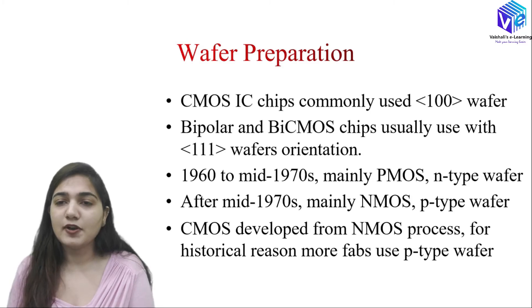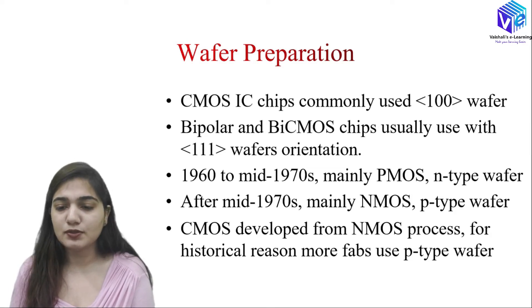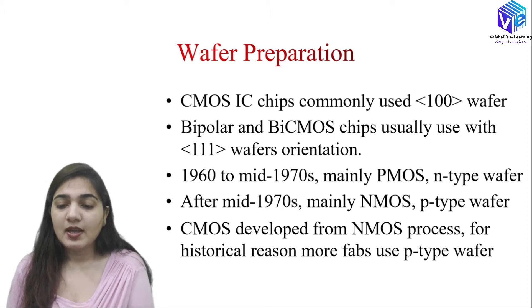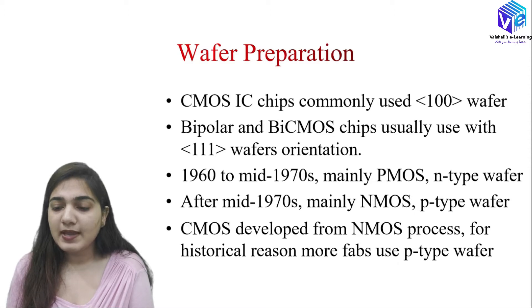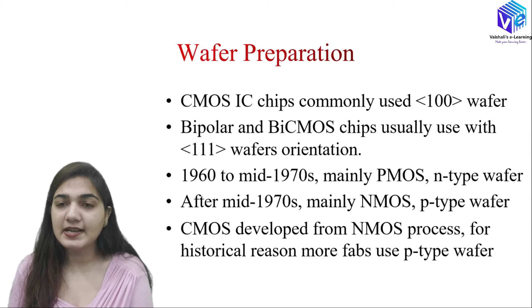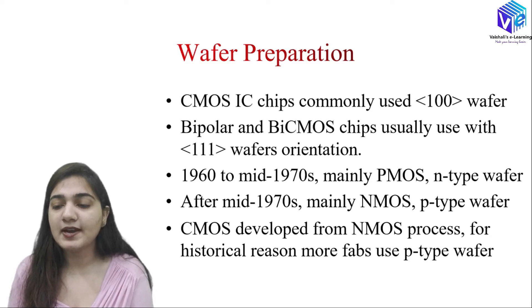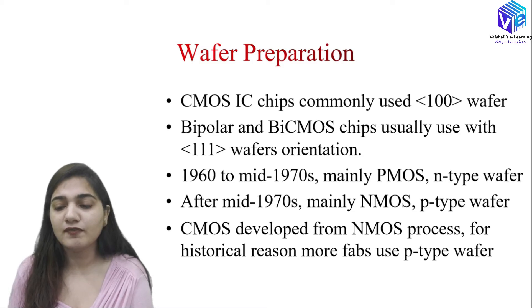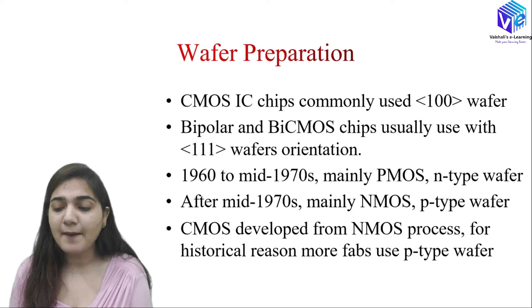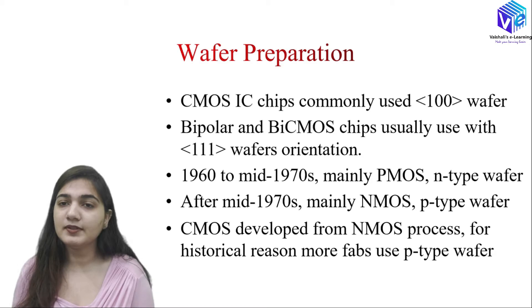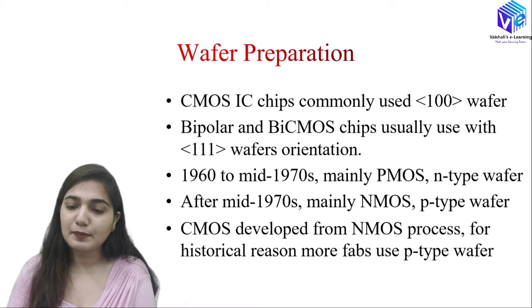The (100) orientation gives straight cutting for rectangular ICs — we want to cut ICs in a rectangular manner, so we prefer the (100) wafer for CMOS MOSFETs, while for bipolar and BiCMOS transistors we use the (111) wafer orientation. From the 1960s to mid-1970s we were mainly using PMOS with N-type wafers, but after the 1970s the technology developed for NMOS with P-type wafers, which was faster due to higher electron mobility compared to holes.